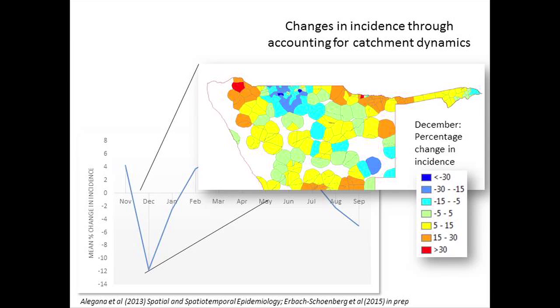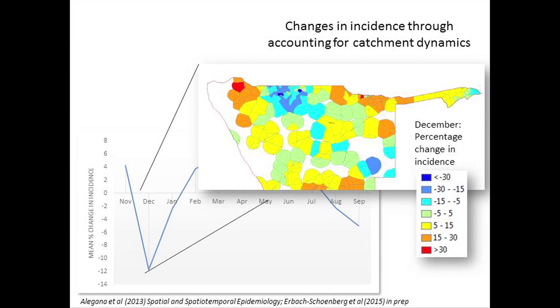Not only within a year but across years as well — we see similar peaks at similar times of year but with annual differences. These data are continually collected day by day, giving the more dynamic picture that is needed. In terms of translating this into incidence estimates, it actually reduces our estimate of incidence in December by 12% and increases it in February and March when populations are moving back during transmission season, with sub-national variation of perhaps 30% in some areas.